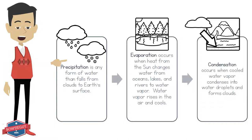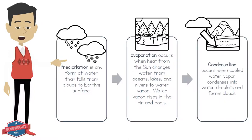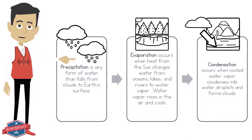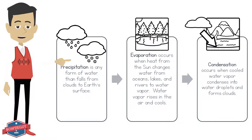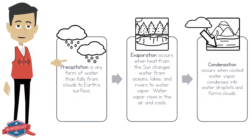Precipitation is any form of water that falls from clouds to Earth's surface. Evaporation occurs when heat from the sun changes water from oceans, lakes, and rivers to water vapor. Water vapor rises in the air and cools. Condensation occurs when cool water vapor condenses into water droplets and forms clouds.